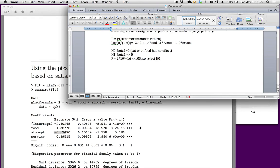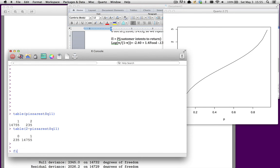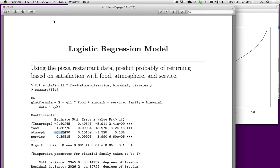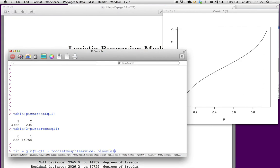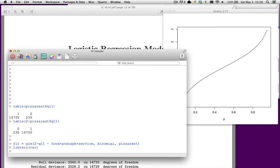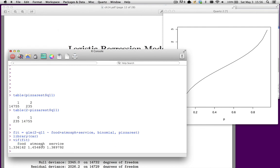What's probably going on is multicollinearity. We can test for that. If I do fit = glm(2 - q11 ~ food + atmosphere + service, family = binomial, data = pizzarest), and then library(car) to get my VIFs, you'll see they're not terrible but they are greater than one. I have some multicollinearity here. This smells like a sign flip.